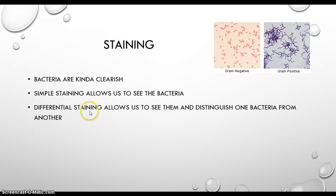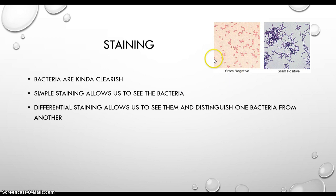A differential stain allows you to see bacteria because you are staining them, but it also allows you to distinguish one bacteria from another. An example of this is Gram staining — your pink ones are Gram-negative and your purple ones are Gram-positive. It allows you to differentiate Gram-positive from Gram-negative bacteria, which is where the term differential staining comes from.